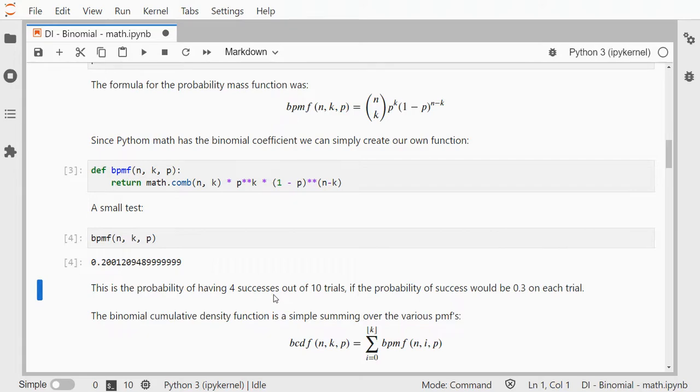Now to get the cumulative distribution function we simply need to sum up over all of these. In here you see a little function which is the floor operator.